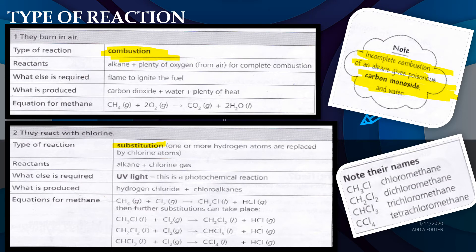For complete combustion, there is plenty of oxygen, and it will produce carbon dioxide. Incomplete combustion produces carbon monoxide (CO). For example, methane plus oxygen produces carbon dioxide and water. A flame is required to ignite the fuel, and the products are carbon dioxide, water, and plenty of heat.